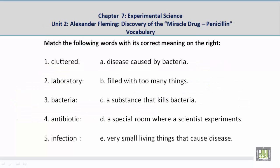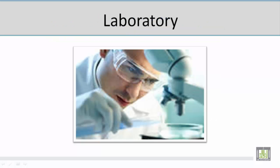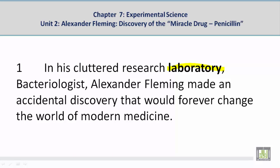Number 2: Laboratory. The correct meaning is D — a special room where a scientist experiments. Now let's take a look at a picture related to the vocabulary word "laboratory." Student: I see here a scientist experimenting on a new thing, like looking into things, bacteria, stuff like that. And that's the special room to do it — laboratory. Now let's take a look at a paragraph related to the vocabulary word "laboratory." In his cluttered research laboratory...